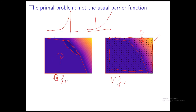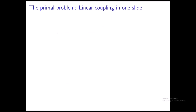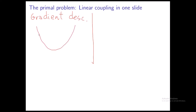Now let's talk about linear coupling. First, we have gradient descent, which we all know. If you have a convex function and you're at a current point, and you know the function is smooth, the gradient won't change very quickly — so the function lives below a certain parabola. If you take as your next point the vertex of that parabola, you get a decrease in the objective proportional to the magnitude of the gradient. That's gradient descent.